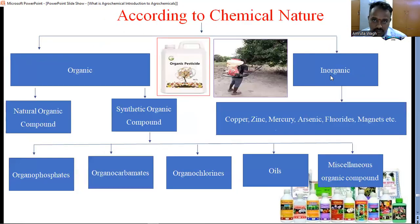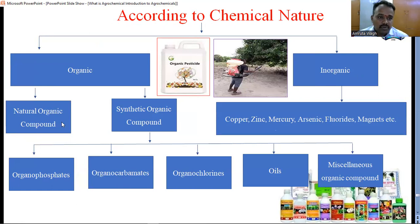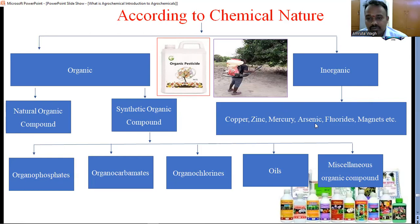According to their chemical nature, there are mainly two types: first is organic, second is inorganic. Organic compounds are further classified as natural organic compounds and synthetic organic compounds. In synthetic organic compounds, there are organophosphates, organocarbamates, organochlorides, oils, and miscellaneous organic compounds. In the inorganic section, there are copper, zinc, mercury, arsenic, borides, magnets, etcetera.